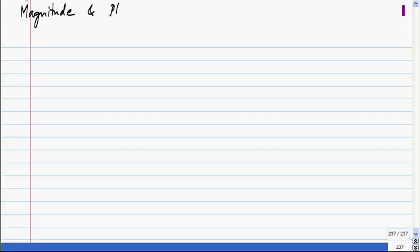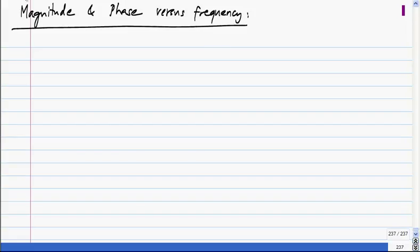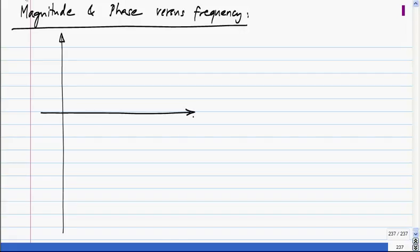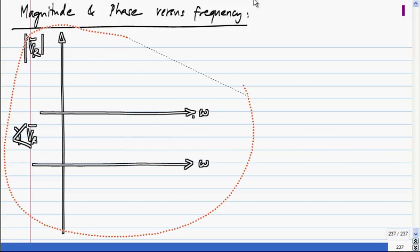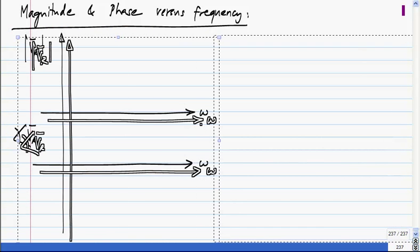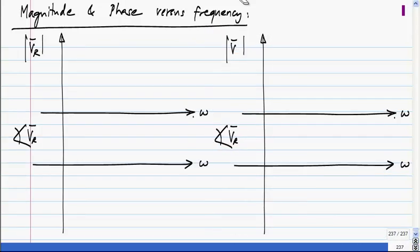Instead of drawing phasors at a particular frequency, what we will do is plot the magnitude and phase of the phasors versus frequency. We can do that here — let me make these axes where I will plot the magnitude of Vr and the angle of Vr.